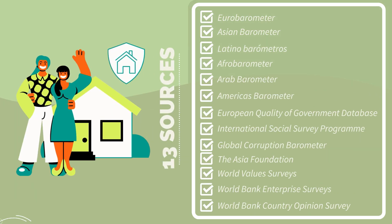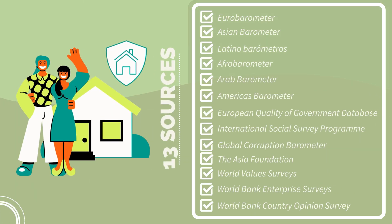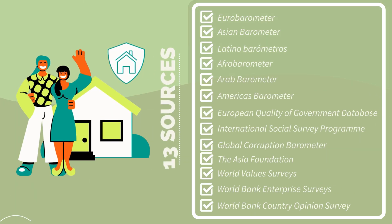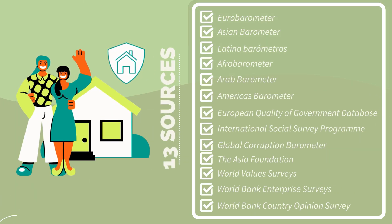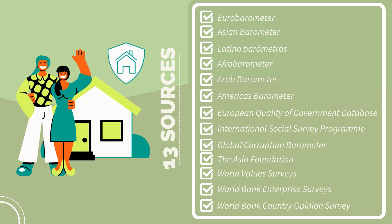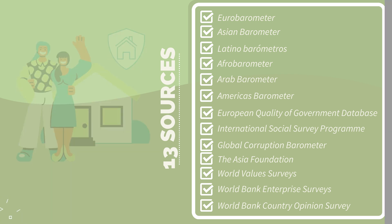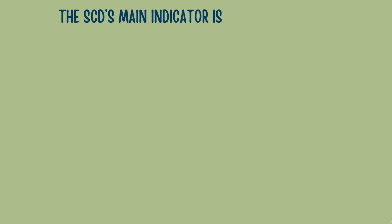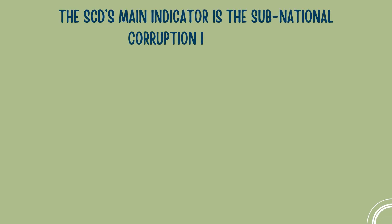The data underlying the SCD mainly come from external household surveys, which Corruption Radar has harmonized and standardized. The main indicator of the SCD is the Subnational Corruption Index, or SCI.